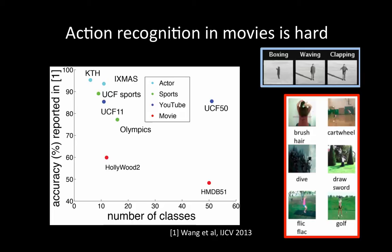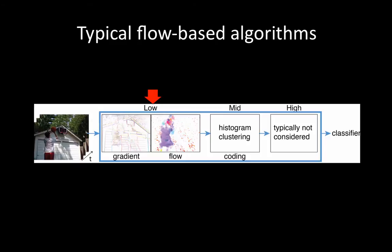This graph compares the performance of a leading action recognition algorithm on a range of existing datasets. Recognizing actions in real movies and videos is hard because they contain variations in lighting, viewpoint, and background clutter. In typical action recognition algorithms, low-level features such as gradients or optical flow are computed. These low-level features are then aggregated to form a vector descriptor for the whole clip, and typically high-level features such as pose are not considered because pose estimation is hard.